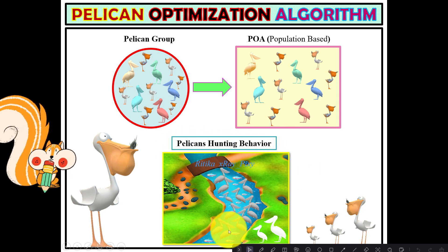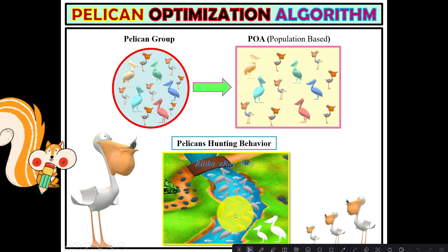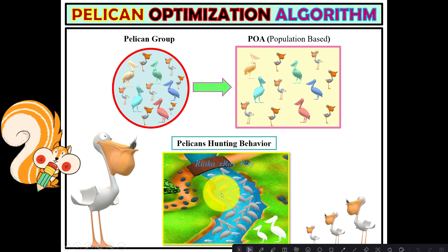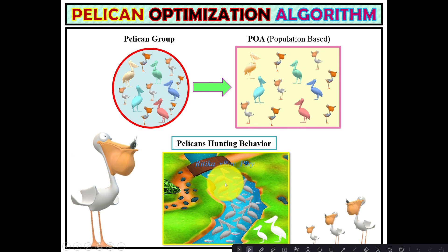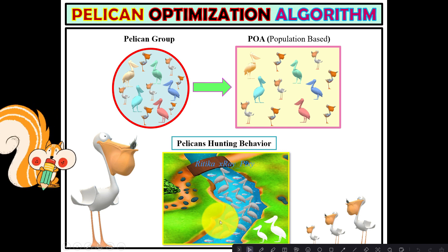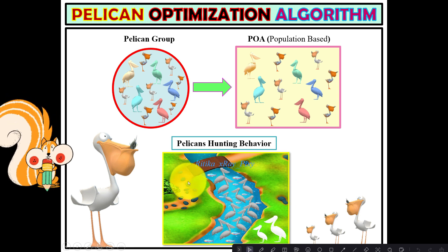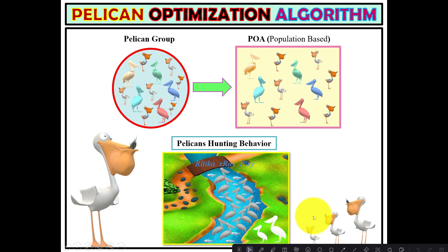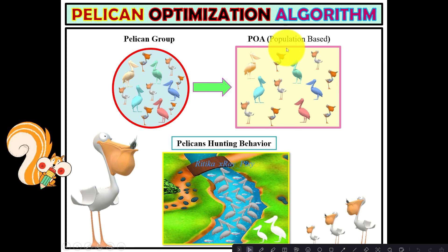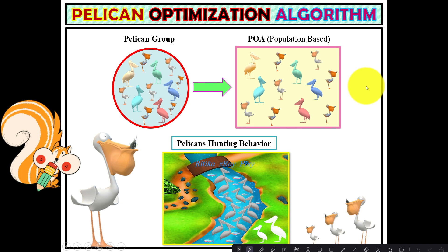Pelicans often hunt together, and this cooperative hunting strategy is known as cooperative feeding. When a group of pelicans spots a school of fish, they work together to herd the fish into a tight group, then dive into the water to catch fish with their bills. Similarly, in the Pelican Optimization Algorithm, this unique cooperative behavior is simulated.